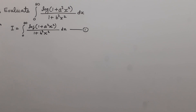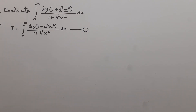Here we can see that a and b are both independent from x, so these are called parameters. If we differentiate this integral with respect to the parameter a, the log will be removed. So we differentiate equation 1 with respect to the parameter a.